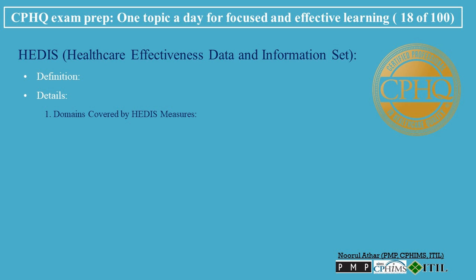Domains Covered by HEDIS Measures: Effectiveness of Care evaluates the success of the care provided in achieving the desired health outcomes. Access to Care measures how easily patients can obtain needed medical care and services. Patient Experience assesses patients' experiences and satisfaction with healthcare services. Utilization and Risk Adjusted Utilization examines the extent to which healthcare services are used and adjusted based on patient risk factors.